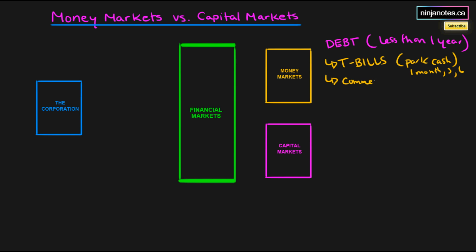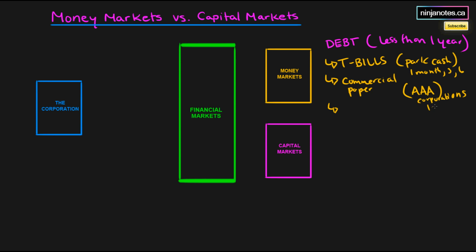Another type of product is commercial paper. A corporation can sell notes to investors if its debt is very highly rated. The corporation sells this commercial paper for a small amount of interest and must return the borrowed amounts plus interest. It's similar to a treasury bill except that a corporation is offering the debt rather than the government. Commercial paper always involves corporations, and the length of time can range from 1 to 364 days, because it must always be less than one year.